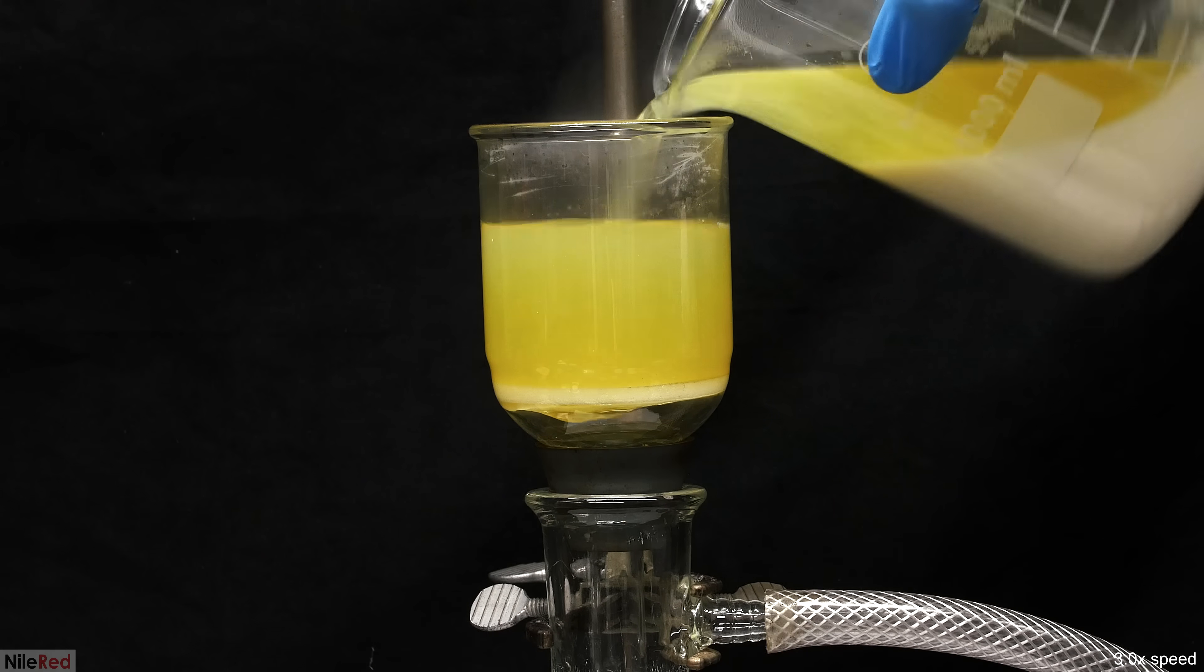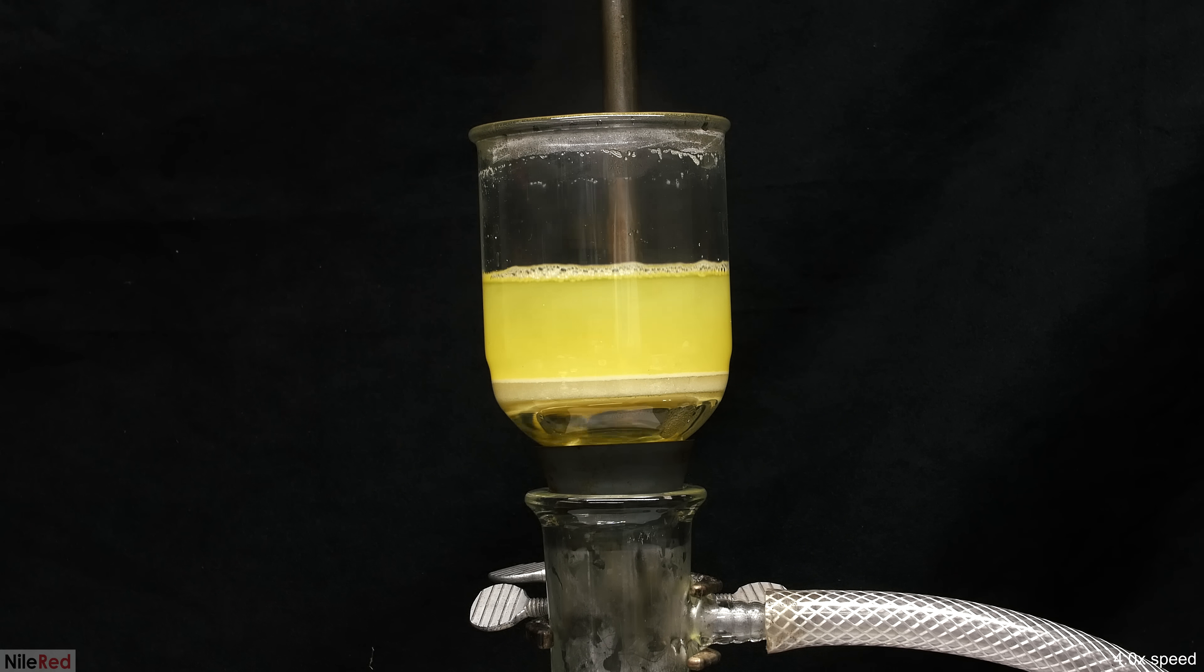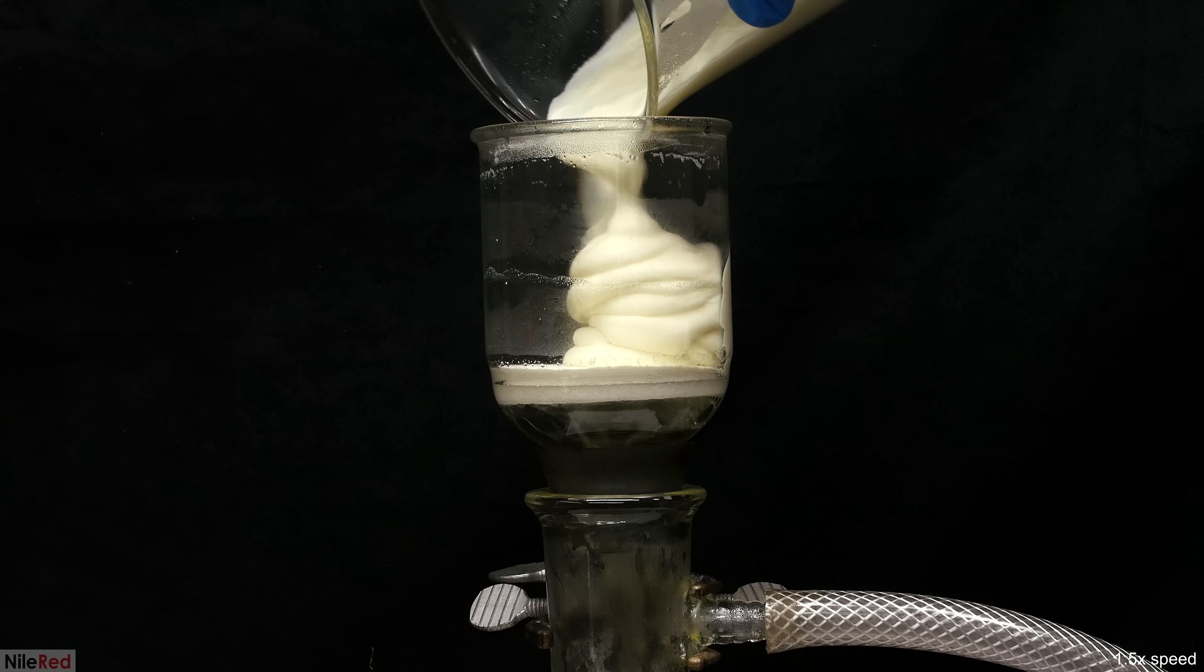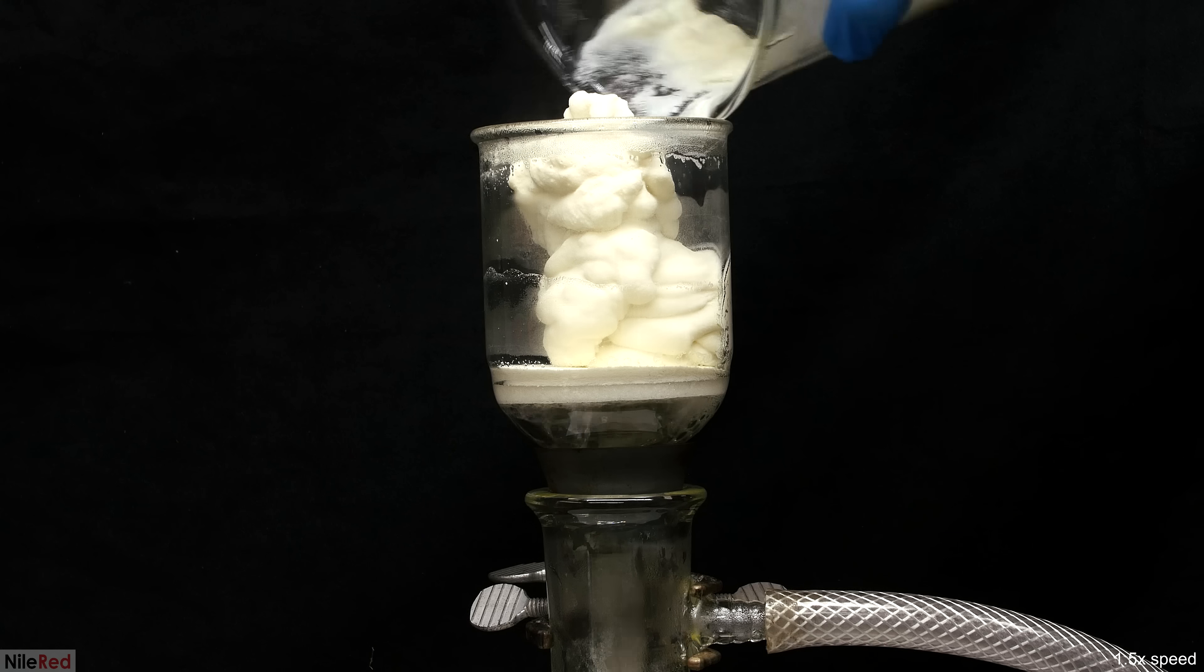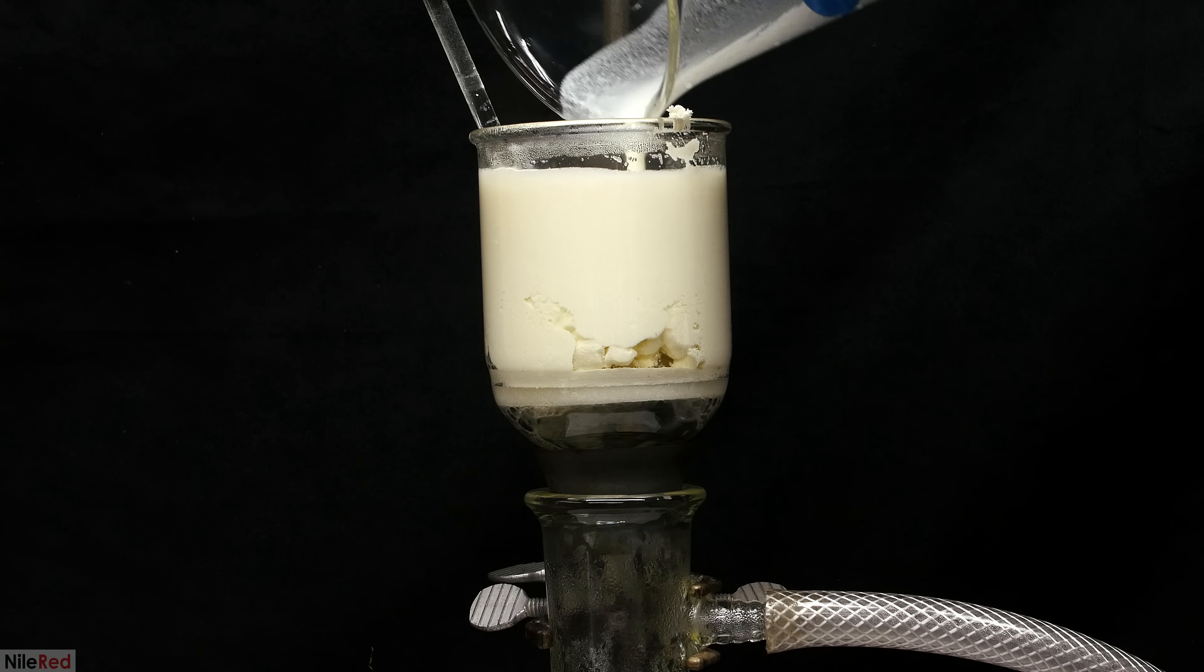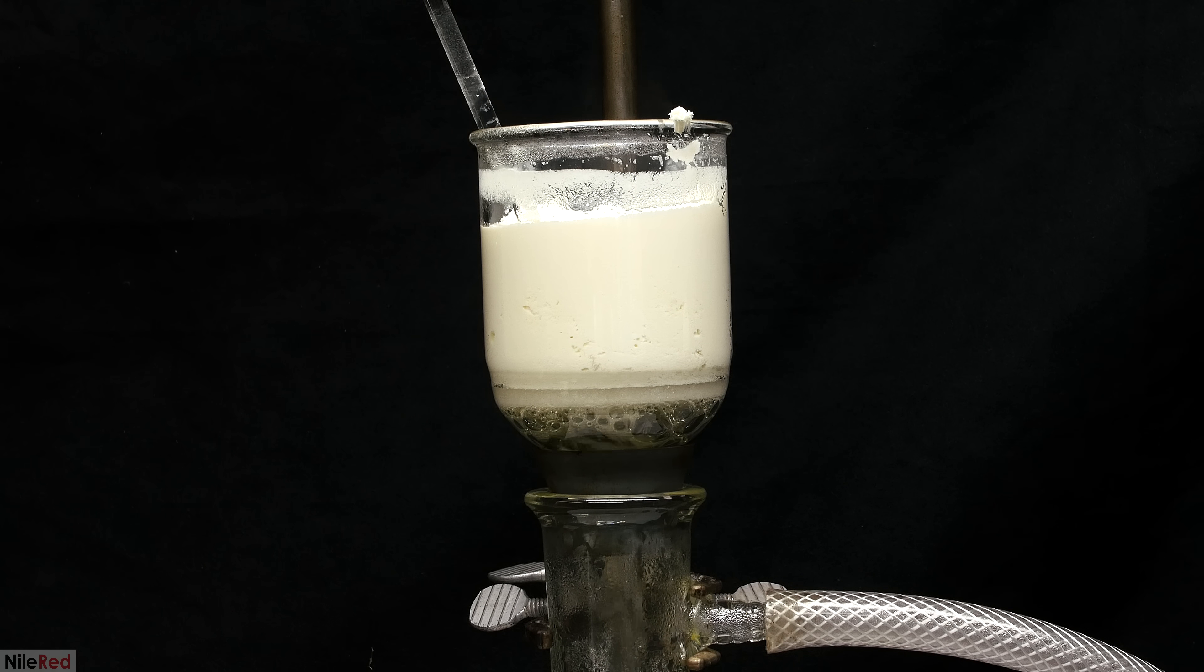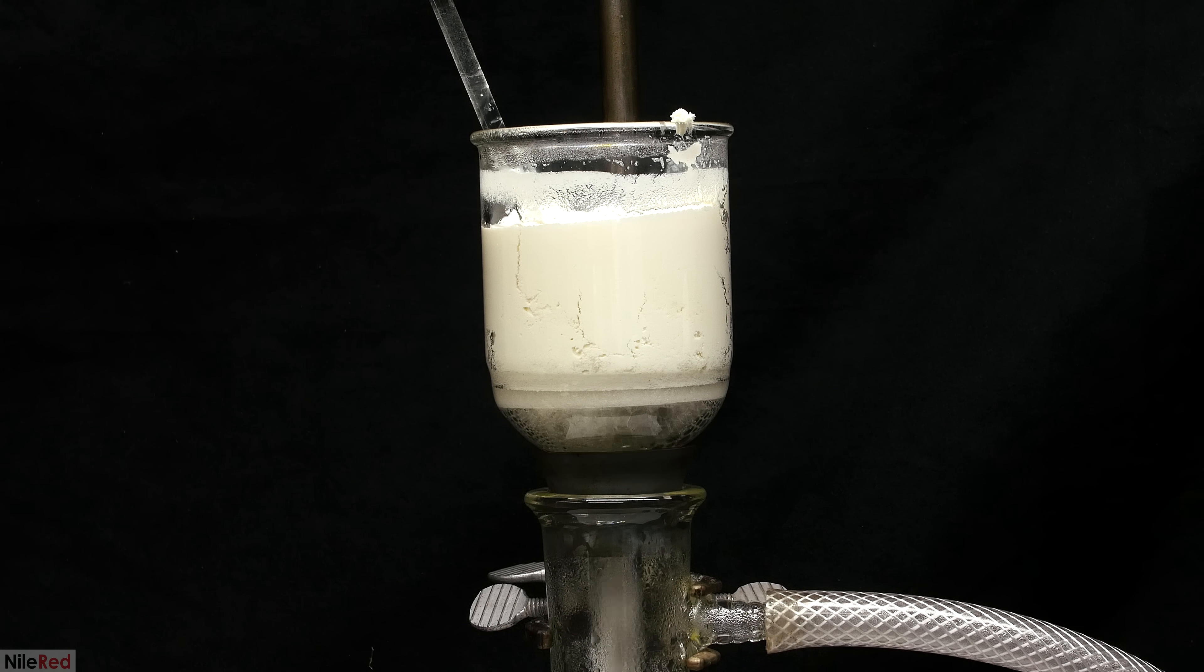While still hot I went ahead and vacuum filtered it off. The first portion that was filtered off was mostly just liquid and then the calcium citrate was transferred to the filter funnel. A little bit of hot water was used to wash the beaker and everything was transferred to the filter. I only needed to do this a couple times until the beaker was pretty much clean.